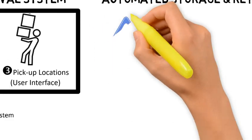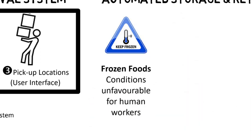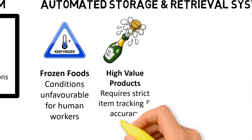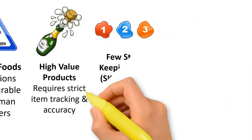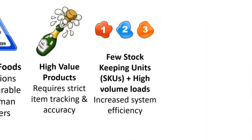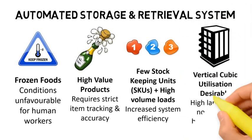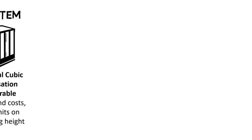When is an ASRS a good idea? It is ideal for frozen foods, e.g. meat and seafood, which need to be stored at minus 28 degrees, because these are conditions not favourable for human workers. It is great for high-value products such as expensive champagne, which requires strict inventory control, since no human workers are able to easily access the products. It is suitable for companies which may have very few stock-keeping units or SKUs but very high volumes. In particular, if no further value-added services are required, the ASRS can support inbound and outbound with high efficiency. And lastly, the ASRS achieves very desirable vertical cubic utilisation, making it attractive in places with high land costs but no limits on building height.